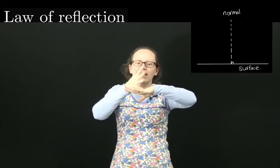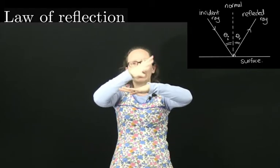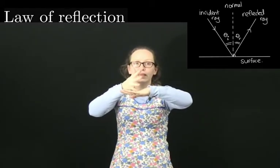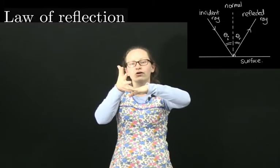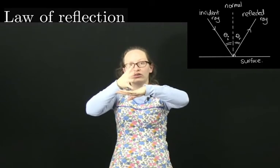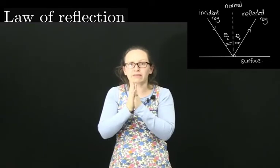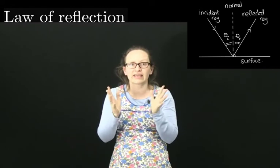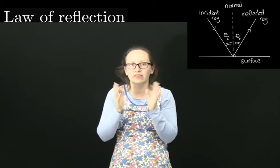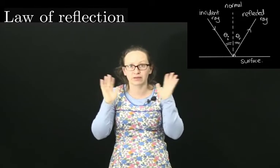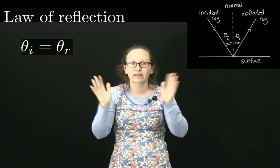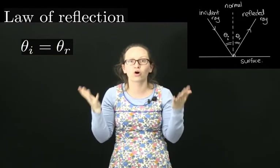And we say that the angle of incidence, which is the angle between the incoming ray and the normal, is equal to the angle of reflection, which is the angle between the reflected ray and the normal. So if we represent θi as the angle that the incoming ray makes with the normal, and θr as the angle that the reflected ray makes with the normal, then we've got θi is equal to θr. And this is known as the law of reflection.